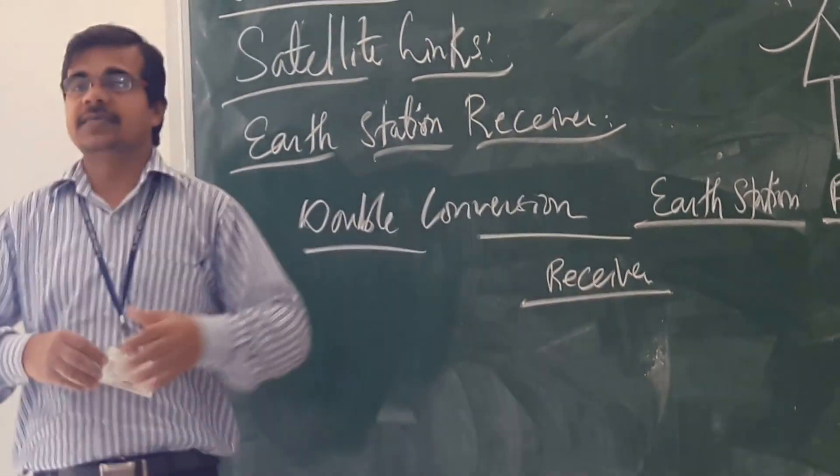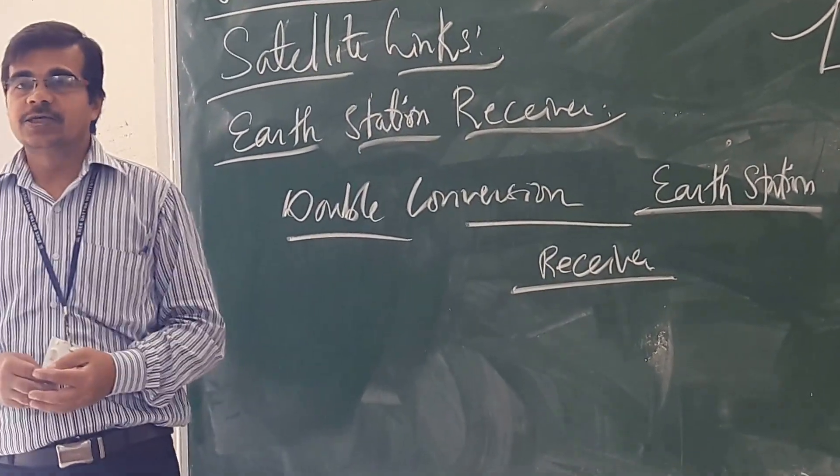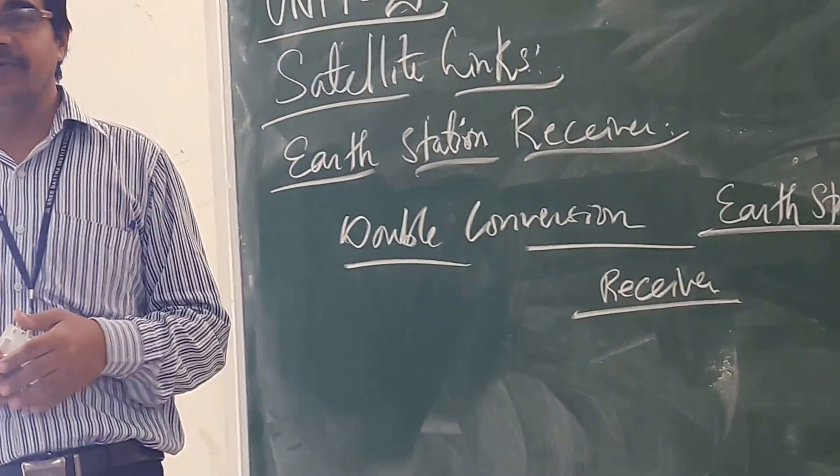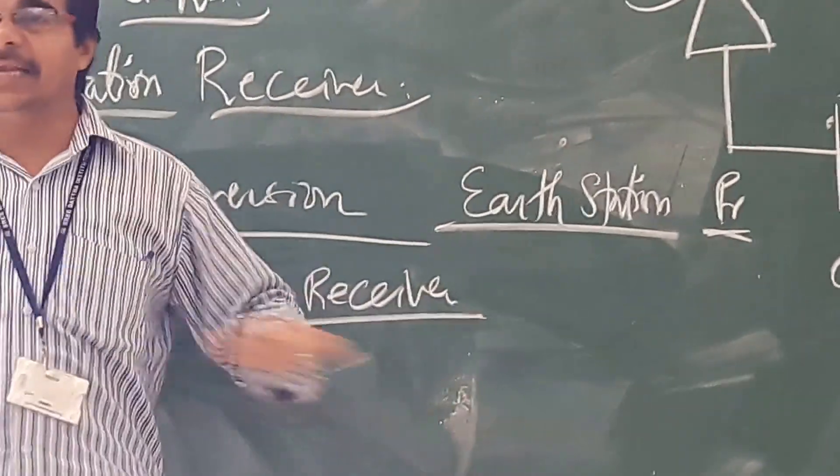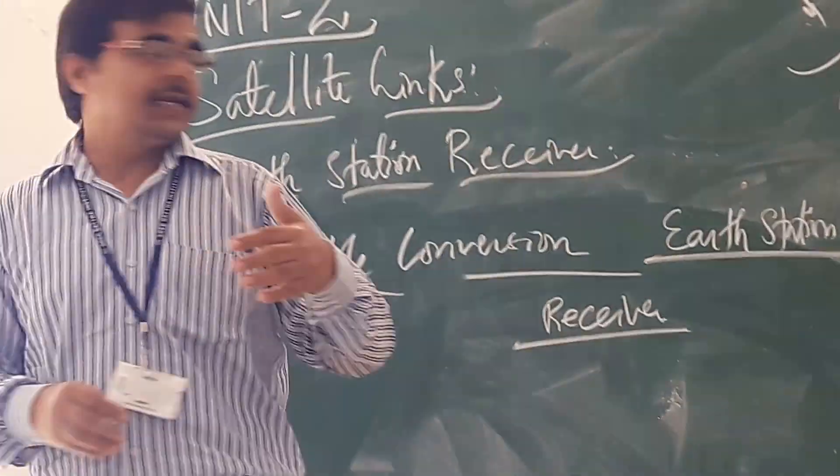Typical earth station receiver. So in that earth station receiver, this is your double conversion earth station receiver. Little bit modification is there. What is that one?